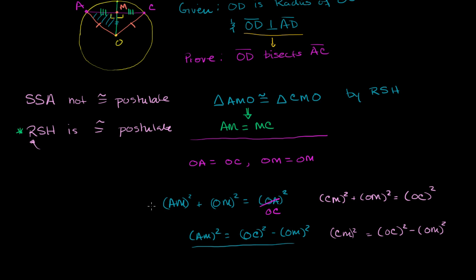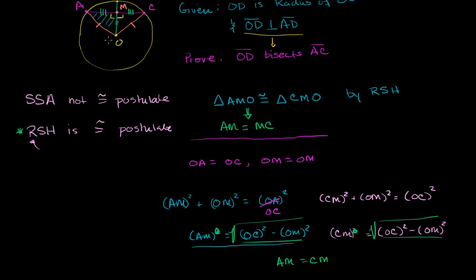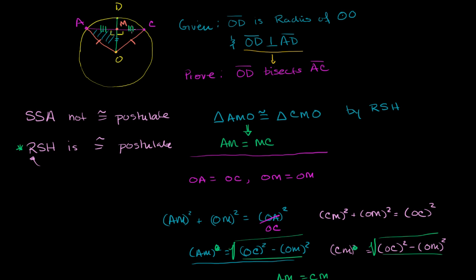Taking the principal root of both sides — since we care about positive distances — we get AM = √(OC² − OM²) and CM = √(OC² − OM²). These two quantities are the same, so AM must equal CM. This makes sense: if two sides of two right triangles are congruent, the Pythagorean theorem uniquely determines the third side, confirming that OD bisects chord AC.